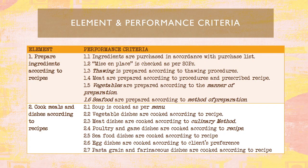Element number one: prepare ingredients according to recipes. All ingredients should be prepared before cooking, including purchasing and preparing them. Number two: cook meals and dishes according to recipes — following different recipes to cook meals, including meat dishes, poultry, seafood dishes, egg dishes, pasta or soup, and vegetable dishes. We should follow the recipes accordingly.